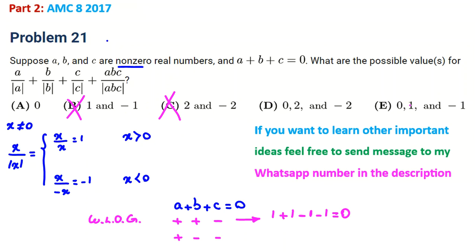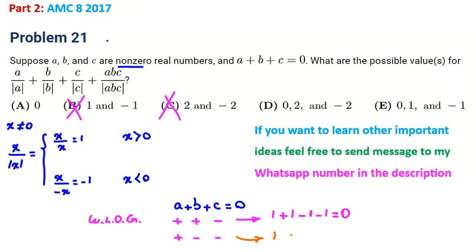Case 2 — one positive, two negatives: a/|a| = 1, b/|b| = −1, c/|c| = −1, and abc/|abc| = positive·negative·negative = positive = 1. So the sum is 1 + (−1) + (−1) + 1 + (−1) + 1 = 0. In both cases the answer is 0, so the answer is choice A.